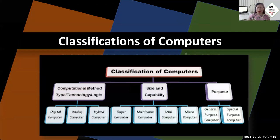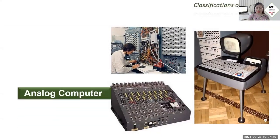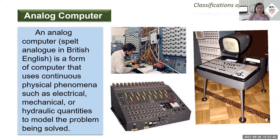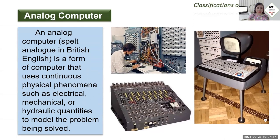Now let's move on to the classifications of computers and how the computer evolved from the mechanical era to the present. The first classification is the analog computer — a form of computer that uses continuous physical phenomena such as electrical, mechanical, or hydraulic quantities to model the problem being solved.